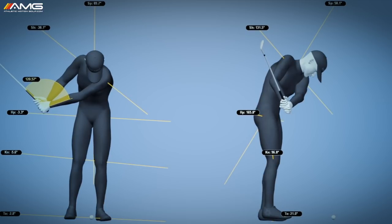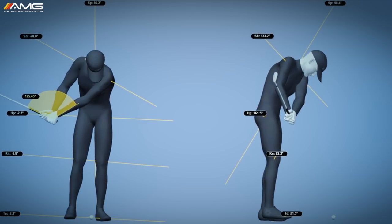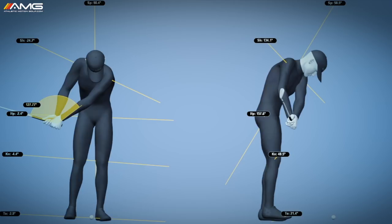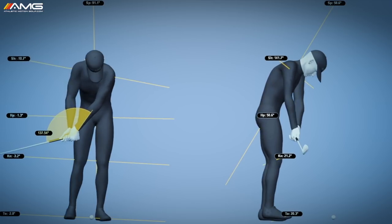The issues he had with his pitching was on those really bare, really soft, really tight lies from say 30 yards and in. He had a difficult time pitching the ball softly with enough loft, having it land soft on the green.